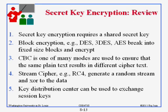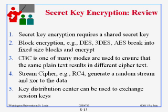To summarize this section: secret key encryption requires a shared secret key, and we talked about three standards - DES, 3DES, and AES. CBC (Cipher Block Chaining) is one of the modes used to ensure you get a different ciphertext every time. We did not cover stream ciphers, so items four and five on the list are crossed out. The first three items - DES, 3DES, and CBC - are what we covered.